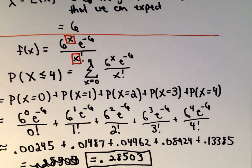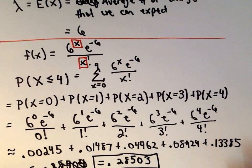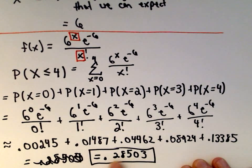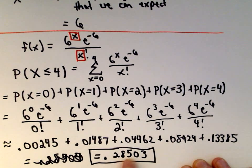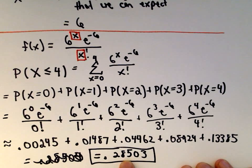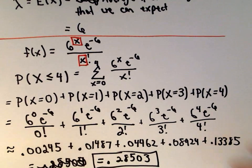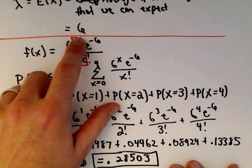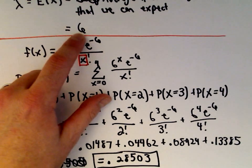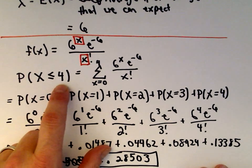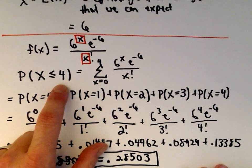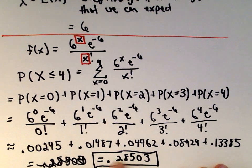This is where it's a little counterintuitive: the probability of getting four or fewer calls is only about 28–29%, roughly 28.5%. On average you'd expect six phone calls during that nine-minute period, but the probability of getting only four or fewer is actually less than 30%.